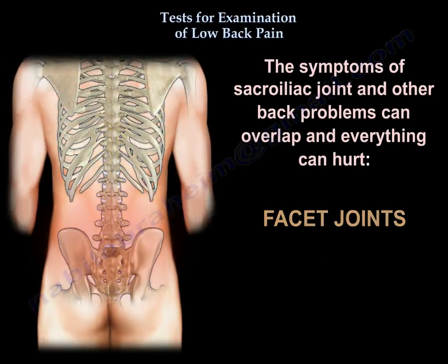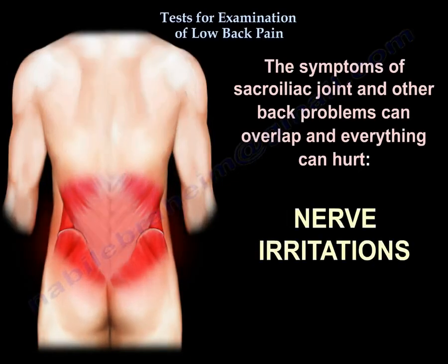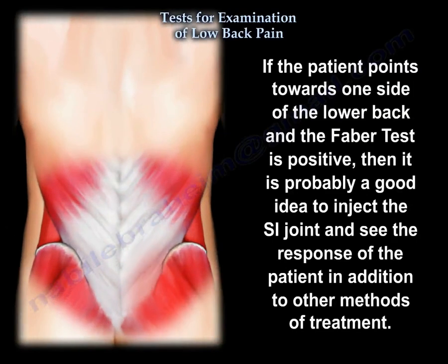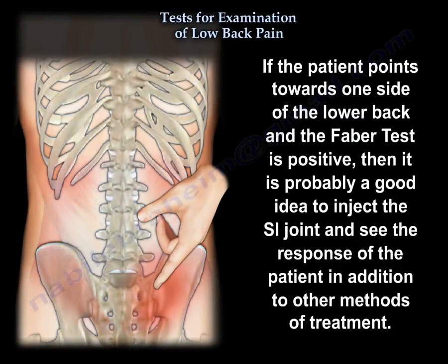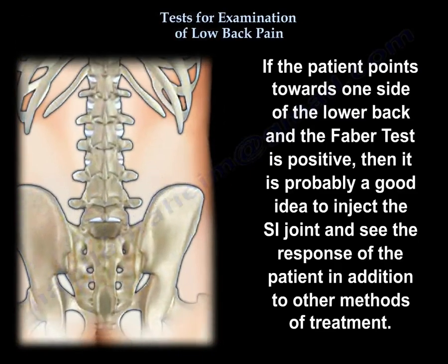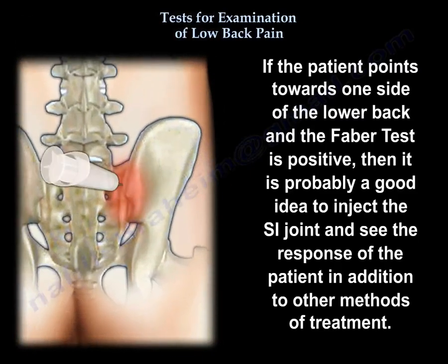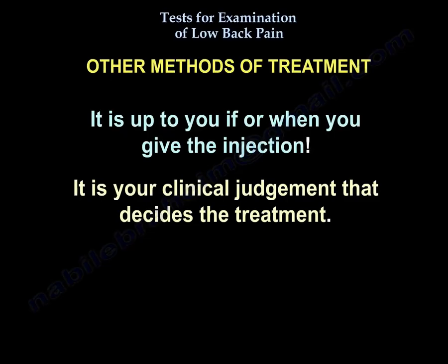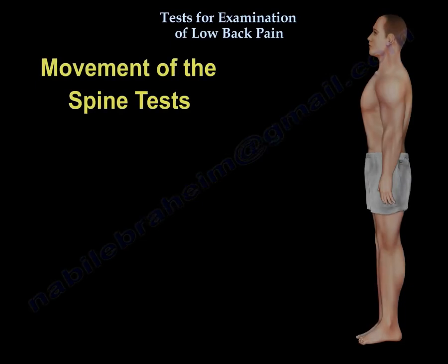Symptoms of sacroiliac joint and other back problems can overlap — everything can hurt: the nerves, tendons, disc, facet, ligaments, muscles, and nerve irritations. The examiner must have a detailed plan and work through an algorithm. If the patient points to one side of the lower back and the Faber test is positive, it is probably a good idea to inject the SI joint and assess the patient's response, in addition to other treatment methods. Clinical judgment decides the treatment.